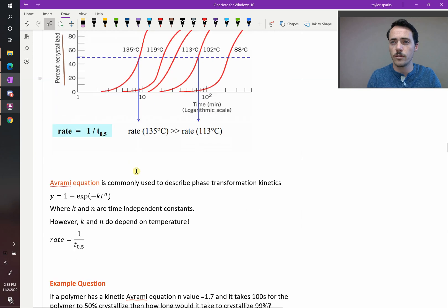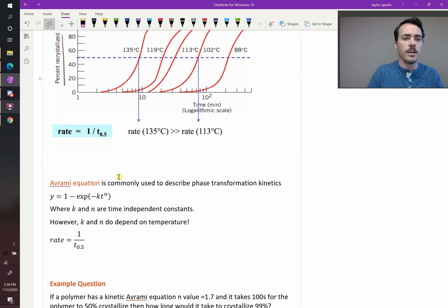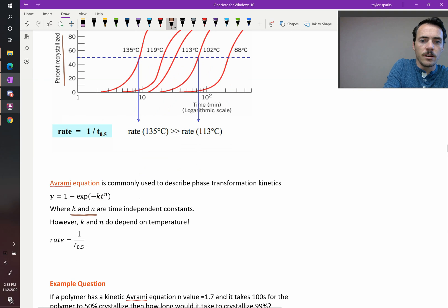Now, what's the expression for this, this Avrami expression? It's 1 minus the exponential of negative K times T to the N. So you have some constants here. You have K and N are our time-independent constants. They do depend on temperature. They do depend on temperature. They don't depend on time.